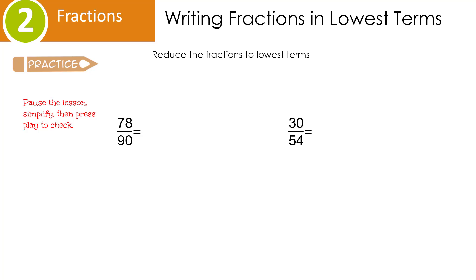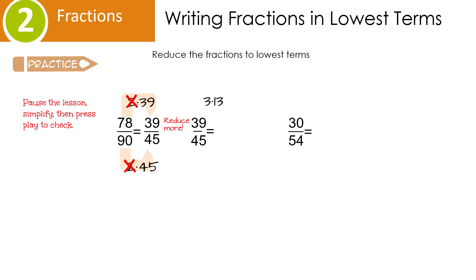Let's see how you did. We have 78 over 90. I can't think of anything other than 2 that goes into 78, so I have 2 times 39. It just so happens that 2 times 45 is 90. When I cancel out my common factors, I end up with 39 over 45. I happen to know that 3 times 13 is 39. Does 3 go into 45? It sure does — 3 times 15. I'm going to cancel out my common factor, and I end up with 13 over 15. That means that 78 over 90 reduces to 13 over 15.